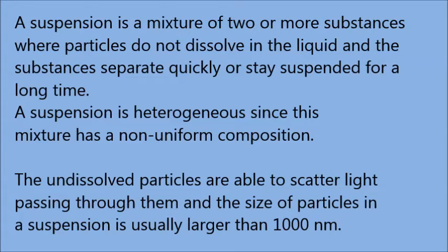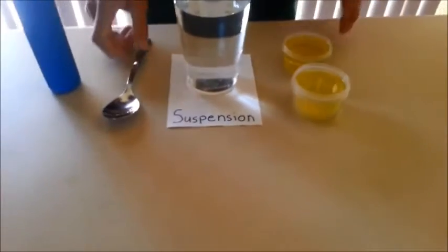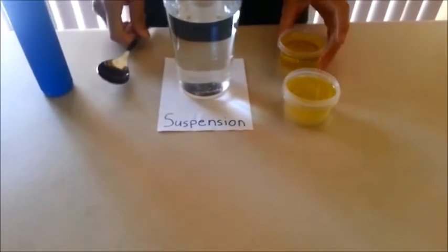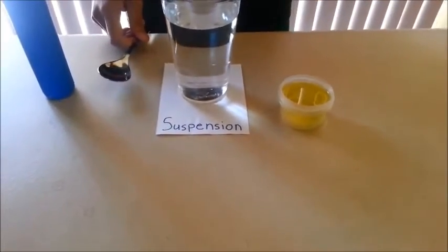What is a suspension? A suspension is a mixture of two or more substances where particles do not dissolve in the liquid and the substances separate quickly or stay suspended for a long time. A suspension is heterogeneous since the mixture has a non-uniform composition. The undissolved particles are able to scatter light passing through them, and the size of particles in a suspension is usually larger than 1000 nanometers. An example of suspension would be mixing oil and water.